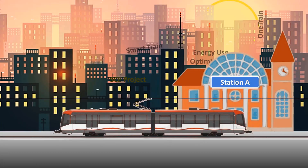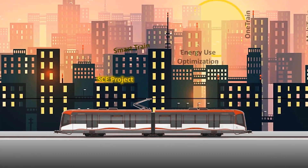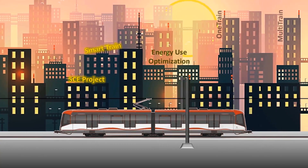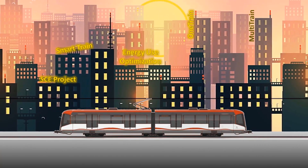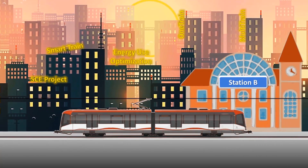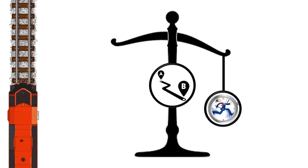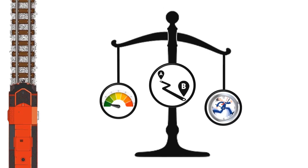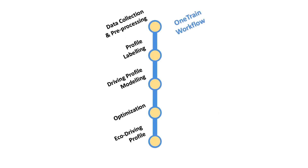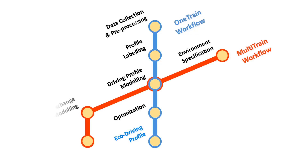The smart city energy analytics project addresses the smart train challenge to optimize energy consumption for one or many trains. A compromise between acceptable travel time and better energy use is targeted. For one train, our decision support toolkit finds an eco-driving profile. For many trains, it is a question of adapting timetables to recover braking energy.